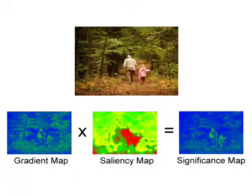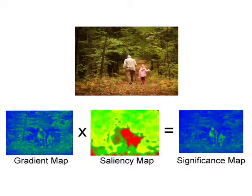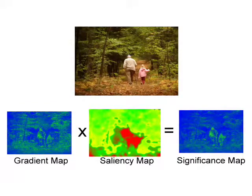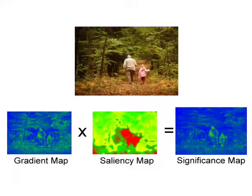We define the significance map as the product of the gradient magnitude and saliency information. The gradient magnitude successfully detects structures; however, it is easily disturbed by trivial repeated patterns such as the trees and leaves in this image. The saliency measure tries to capture the human perception of an image and indicates the attractiveness of a local region. By combining the two measures, our significance map is more accurate in detecting prominent features.